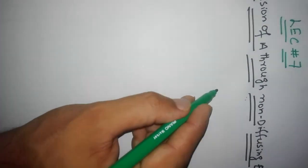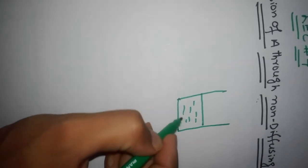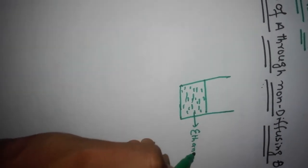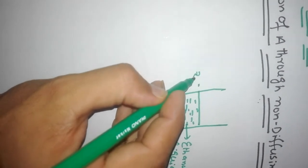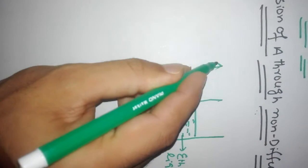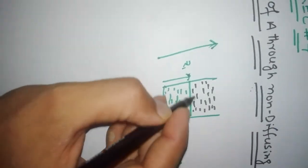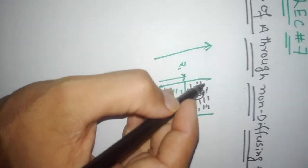Now what is its meaning? Let us consider a beaker with some liquid at its bottom. There is liquid ethanol in the beaker, at height Z1. There is stagnant air above the ethanol, denoted by B. Air is component B.